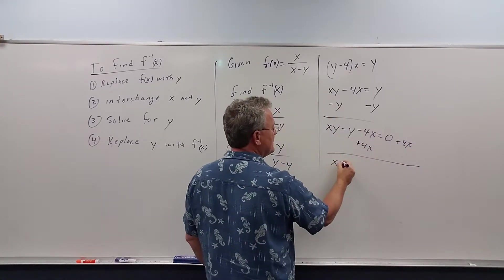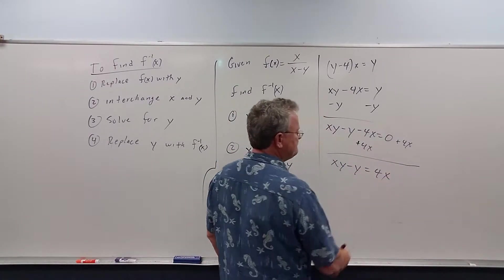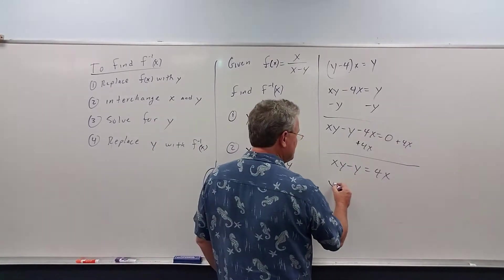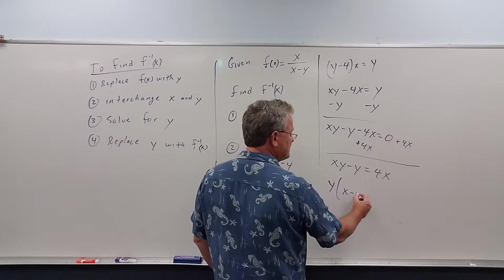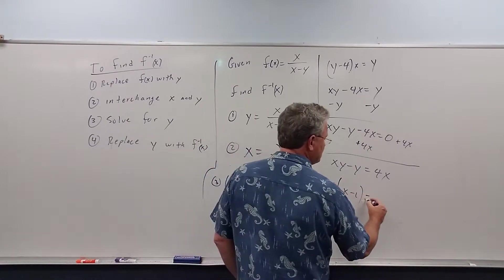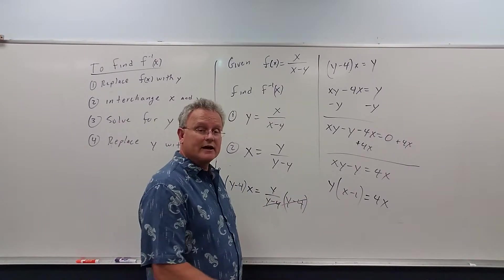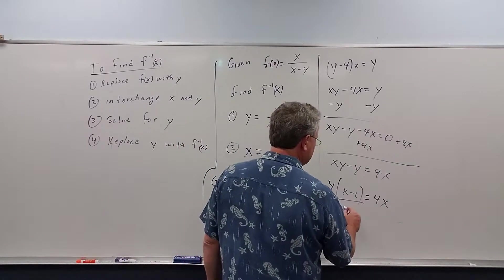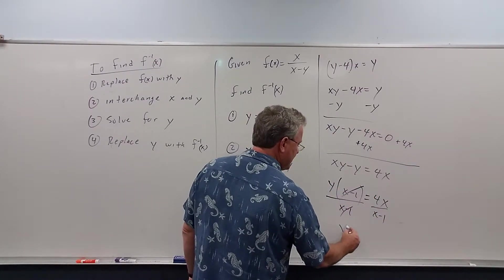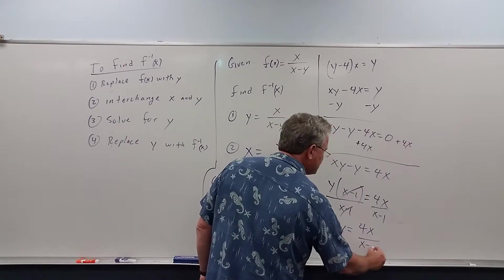These two terms have a y, so we leave them on the left side. This does not have a y, so we move it to the other side by adding 4x to both sides. When we do that, we get xy minus y equals 4x. Now, to solve for y, we've got to factor out y. So when I factor y out, I'm left with x minus 1 because we get xy minus y equals 4x. And the last, almost the last step, I divide both sides by x minus 1. These cancel, and I get y is equal to 4x over x minus 1.